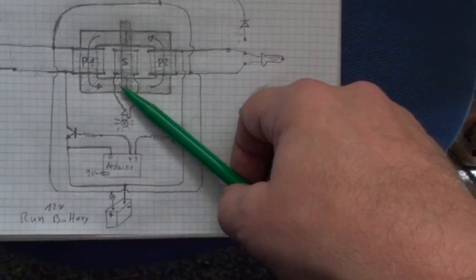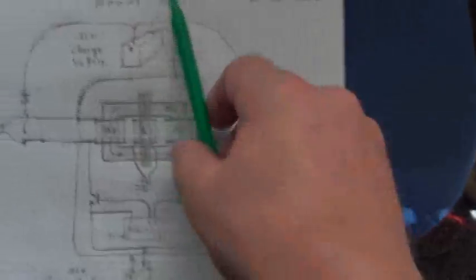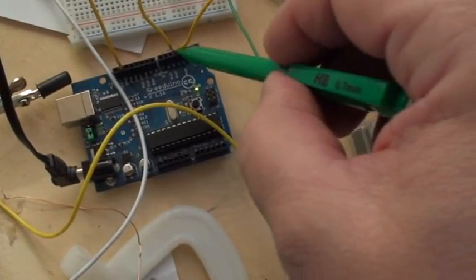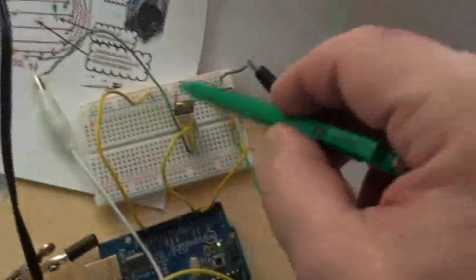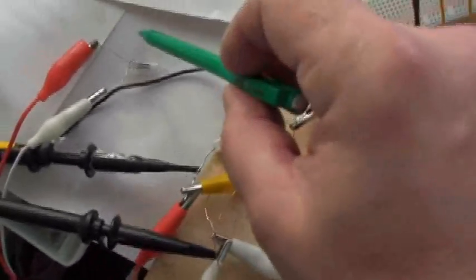I'll show you if it works. This is the machine here. You see this is the run battery, this is the Arduino with only connecting two, three and four pins, the two transistors, nine volt battery to power the Arduino, and here the two neon bulbs here and here. And here the two primaries.